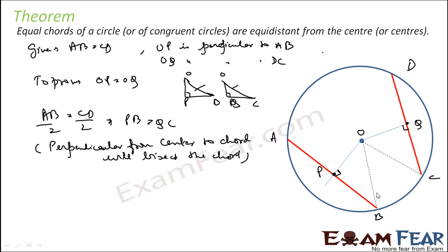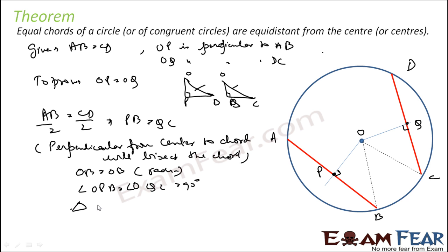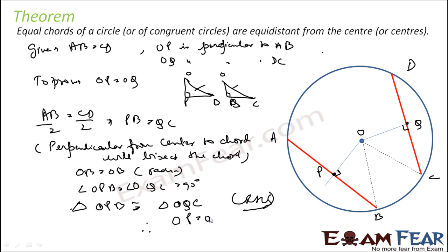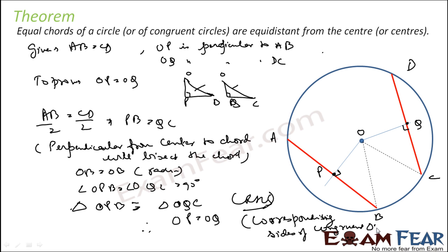So we got PB is equal to QC. OB is equal to OC — they are all radii. And angle OPB is equal to angle OQC, equal to 90 degrees. Thus these two triangles are congruent — triangle OPB and triangle OQC — by RHS. Therefore, OP is equal to OQ by corresponding sides of congruent triangles.